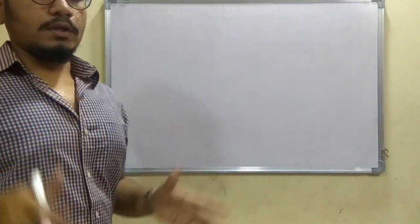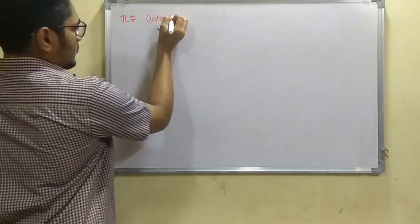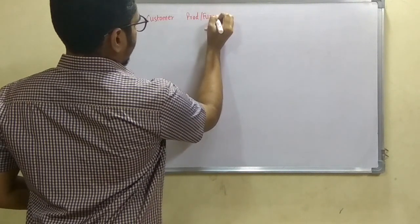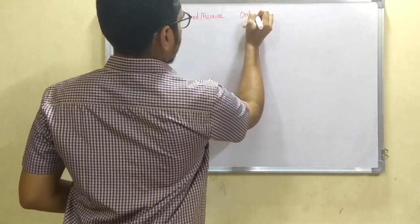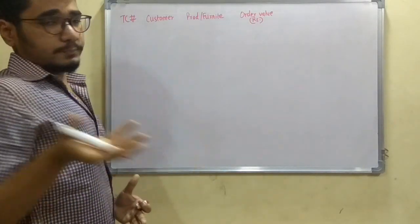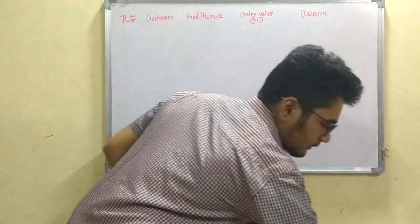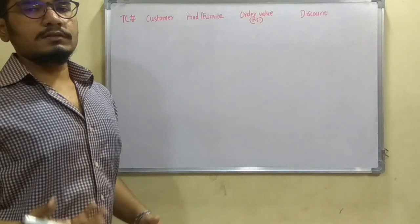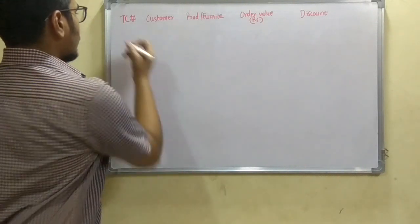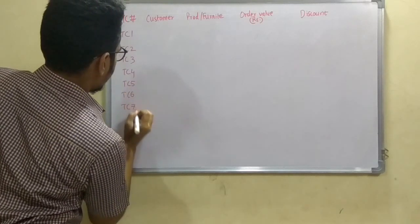The test case table will have 5 columns: test case ID, customer type (DGS&D, agent, or retailer), product or furniture, order value in rupees, and finally the expected output or discount. We have 8 different test cases: TC1, TC2, TC3, TC4, TC5, TC6, TC7, and TC8.